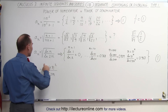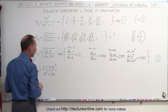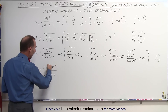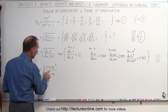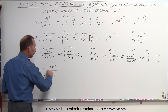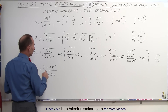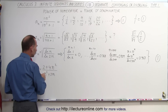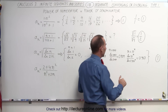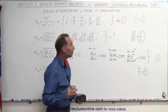The final example is more like the norm. We have n squared, n to the first, and n squared. We ignore the lower-order terms — the 2 times n and the constant 2 — and look only at the portions where n is raised to the highest power. Since the highest powers are equal, the sequence converges, and it converges to the ratio of those leading coefficients: 4 to 1, which equals 4.